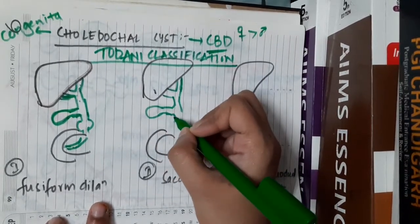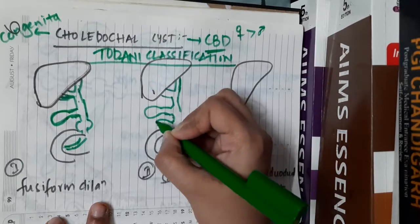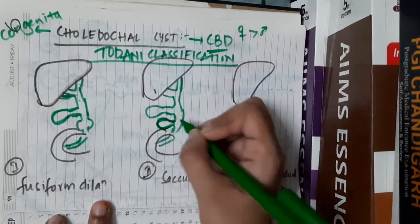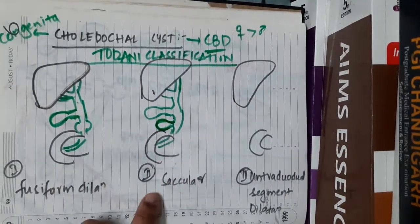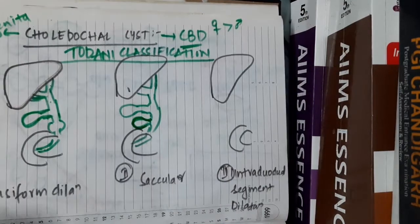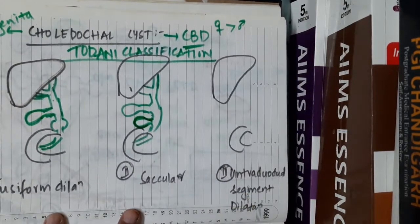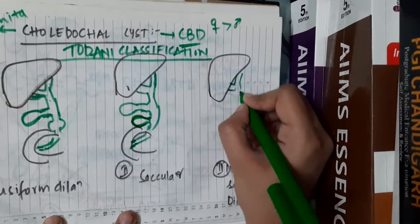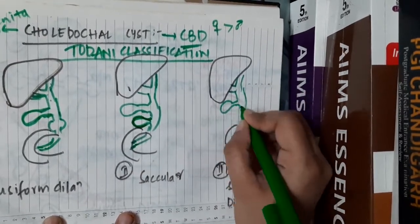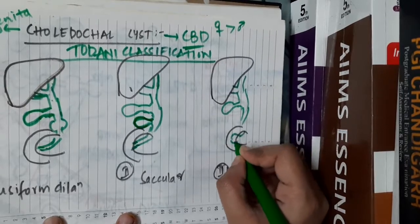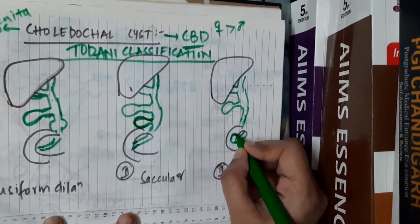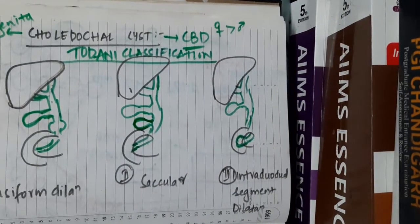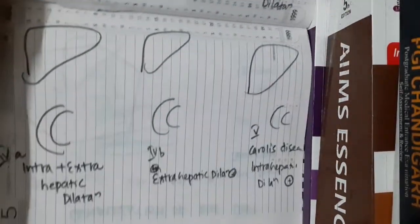In Type 2 of Todani's classification, there is saccular dilatation. Type 3 involves intraduodenal segment dilatation — the intraduodenal segment undergoes dilatation in Type 3 choledocal cyst.